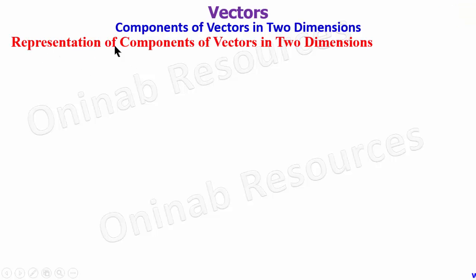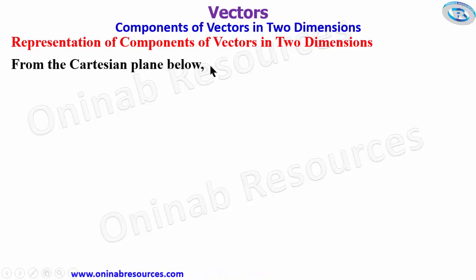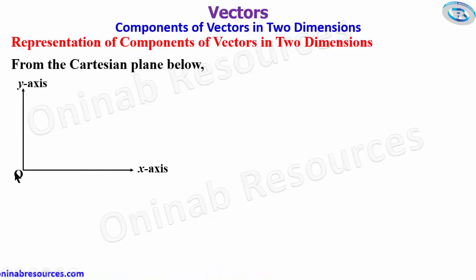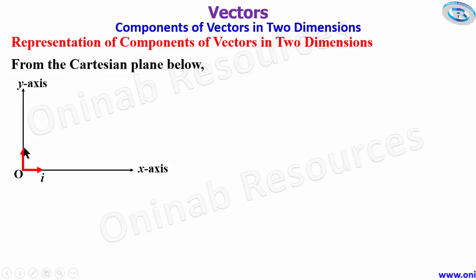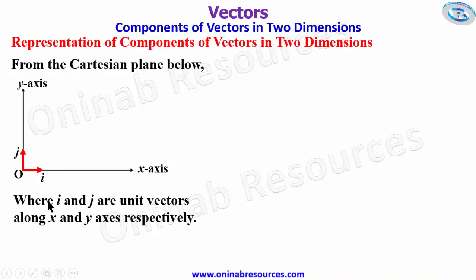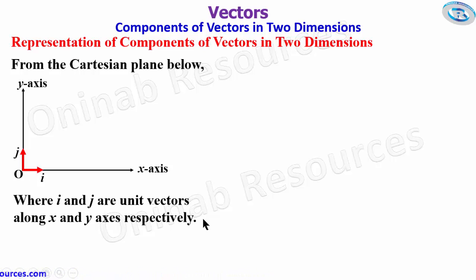First, we look at the representation of components of vectors in two dimensions. From the Cartesian plane below, we have the x-axis and the y-axis, where u is the origin. We consider a unit vector i along the x-axis and a unit vector j along the y-axis. So i and j are unit vectors along x and y-axis respectively, and the coordinates of i are (1, 0) and that of j are (0, 1).